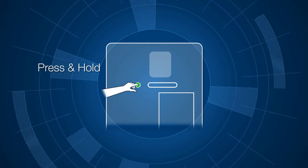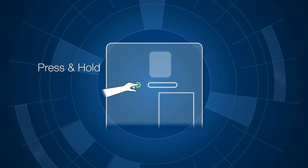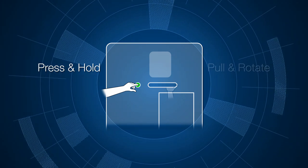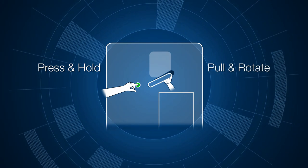To unlock the door, press and hold the black button located to the left of the handle, then pull and rotate the handle counterclockwise.